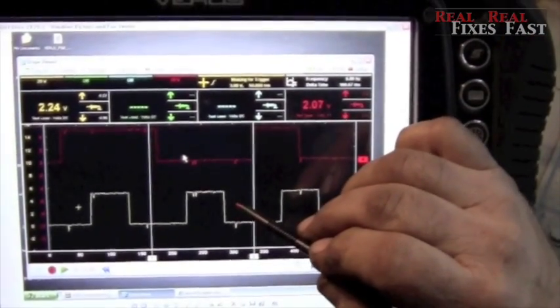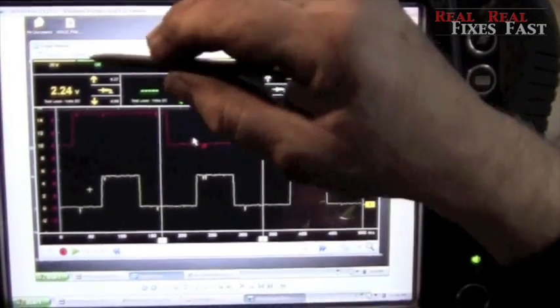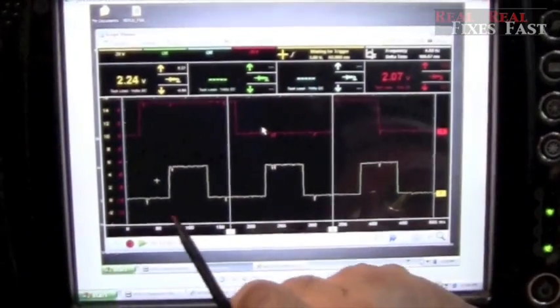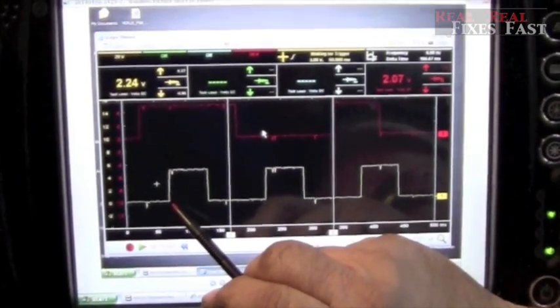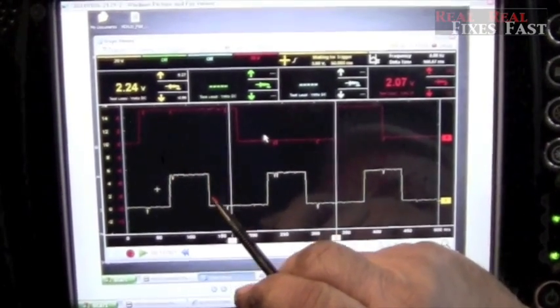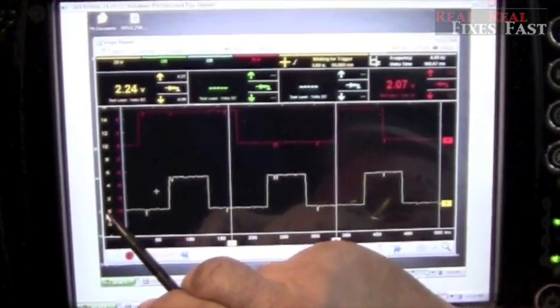Now this is the new crank sensor. I've got the sweep different because the engine was running. But as you can see here, we've got good clean ons, power across, good clean offs, and we're going to ground.